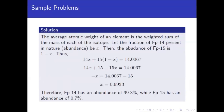If the fraction of FP14 is X, then the fraction of FP15 is 1 minus X. The weighted sum is 14 times X plus 15 times (1 minus X), which equals the average atomic weight of 14.0067. It is very crucial to know how to set up weighted average problems like this.